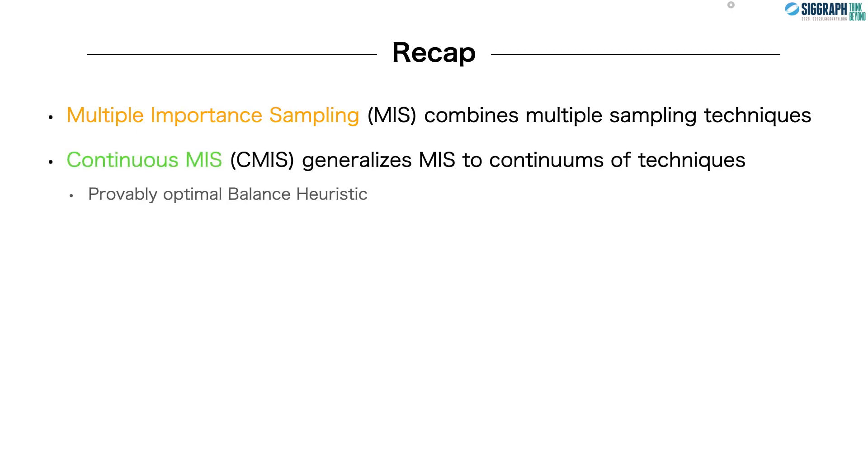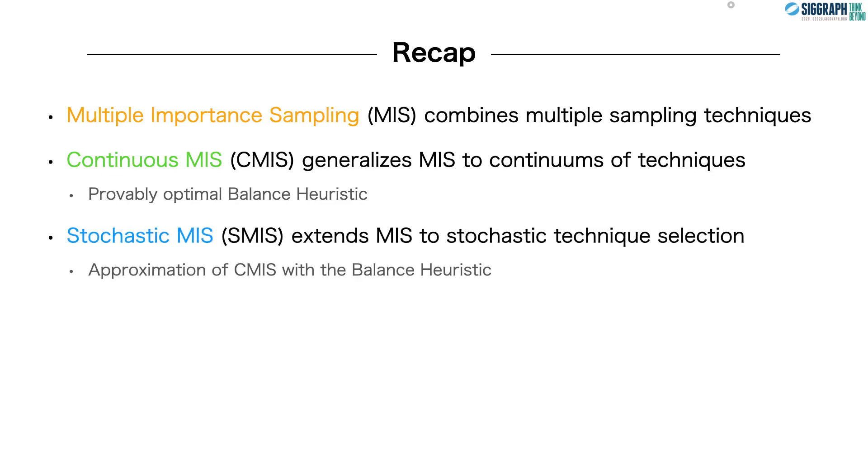But first, a quick recap of what we've looked at so far. MIS lets us combine multiple techniques, but it doesn't work for continuums. Continuous MIS generalizes MIS to continuums and comes with a provably optimal balance heuristic, but this balance heuristic can be difficult to evaluate in practice. Stochastic MIS helps to solve that problem by extending MIS to stochastic technique selection, which we leverage to approximate CMIS with the balance heuristic weights. And so next, we'll look at three applications of CMIS in rendering, namely path reuse, spectral rendering, and photon planes.